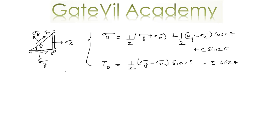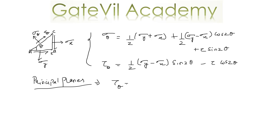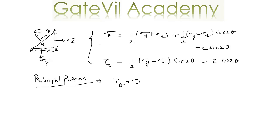These are the expressions we derived, and we will need them to define principal planes and to find principal stresses. Principal planes are those planes on which shear stress is zero. That means a plane at which tau theta equals zero will be a principal plane, and the normal stresses on those planes are called principal stresses.